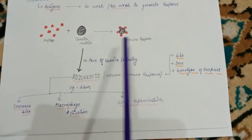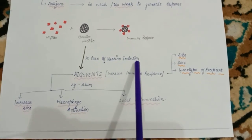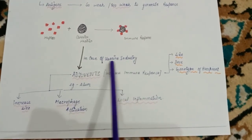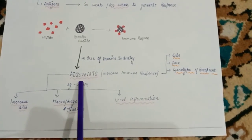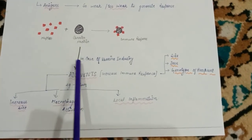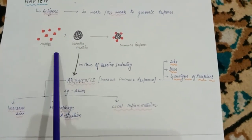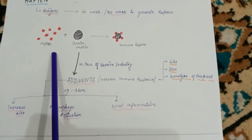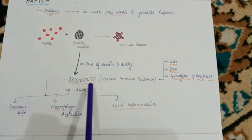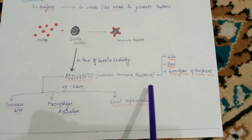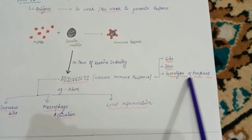A pictorial representation shows haptens reacting with a carrier protein. If a carrier protein or some larger molecule is present, they can generate an immune response. So it is very clear that haptens are too small — size is the only defining property here. When haptens combine with a carrier protein, they can generate an immune response. In the vaccine industry, this carrier protein is essentially what adjuvants are.